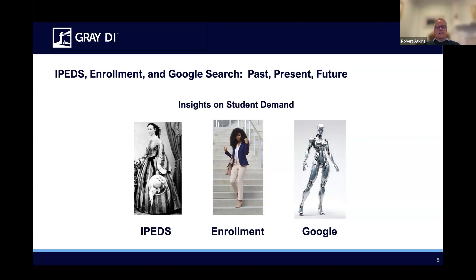We complement IPEDS with two other sources. Enrollment data from the National Student Clearinghouse updates three times a year and is by program, so you get a very good sense of what current enrollment trends are and which programs are in more demand. And then we start to look forward — Google gives us a window into what people are looking for before they're in school, so that gives you a little bit of a future look, maybe three to six months out, at the particular academic programs that are in students' minds these days.